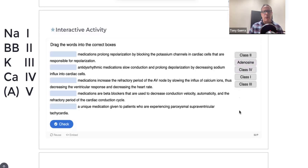The first one is medications prolong repolarization by blocking the potassium channels in cardiac cells that are responsible for repolarization. Number two says anti-dysrhythmic medications slow conduction and prolong depolarization by decreasing sodium influx into cardiac cells. Medications increase the refractory period of the AV node by slowing the influx of calcium ions, thus decreasing the ventricular response and decreasing the heart rate. Medications are beta blockers that are used to decrease conduction velocity, automaticity, and the refractory period of the cardiac conduction cycle. And then a unique medication given to patients who are experiencing paroxysmal supraventricular tachycardia. So our keywords were potassium, sodium, calcium, beta blocker, and then medication.